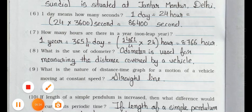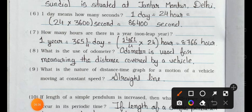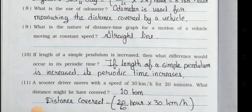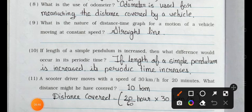Now see question number eight: what is the use of odometer? Answer is: odometer is used for measuring the distance covered by a vehicle. See question number nine: what is the nature of distance time graph for a motion of a vehicle moving at constant speed? Answer is the straight line.